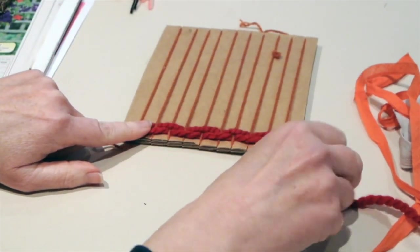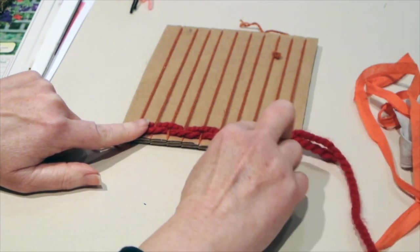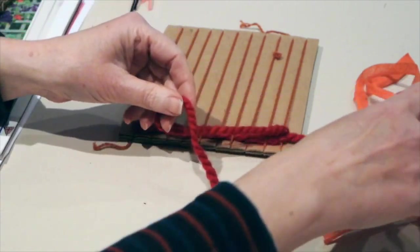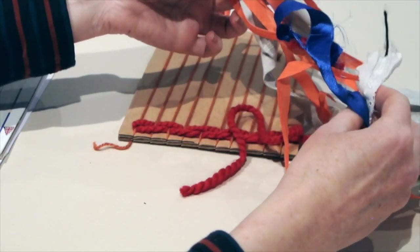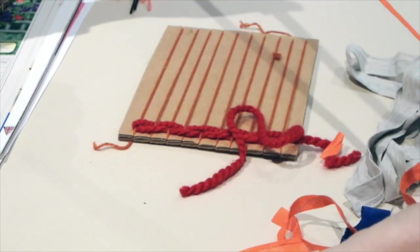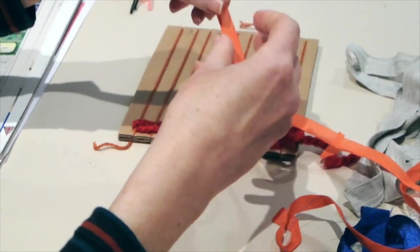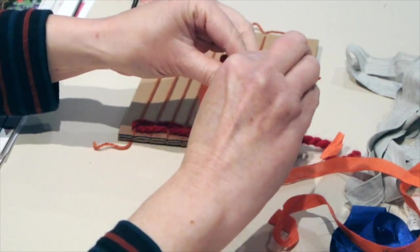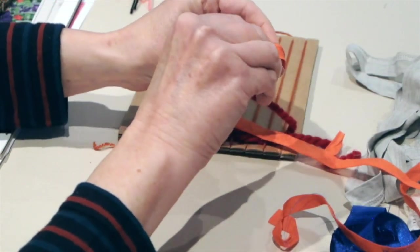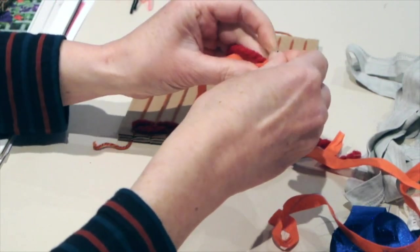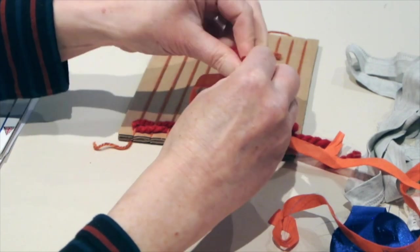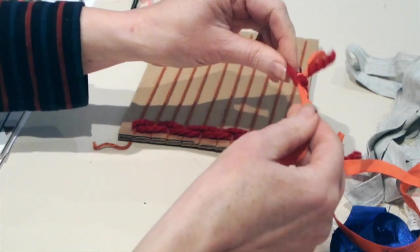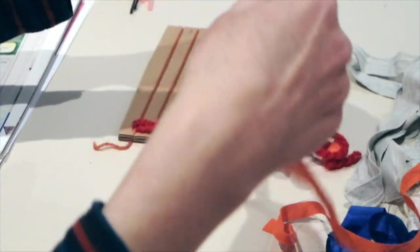Now, if I want to attach a new piece of thread because I want to change colour or I've come to the end, I can choose from my pile of fabrics. I'm going to choose some orange ribbon. To join it, I'm going to bring the two ends together of the piece I've been weaving with my new piece, and knot them together quite firmly. Then I can carry on weaving.